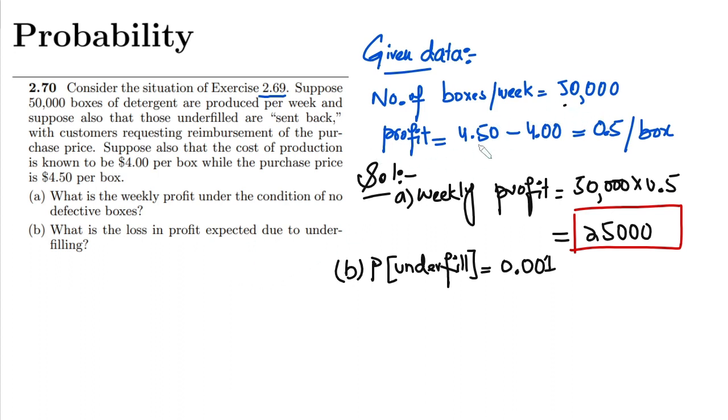number of boxes which can be underfilled per week can be calculated by 0.001 multiplied by 50,000, which equals 50. These are the number of boxes which will be underfilled. If these are the number of underfilled boxes, the amount of the loss which will